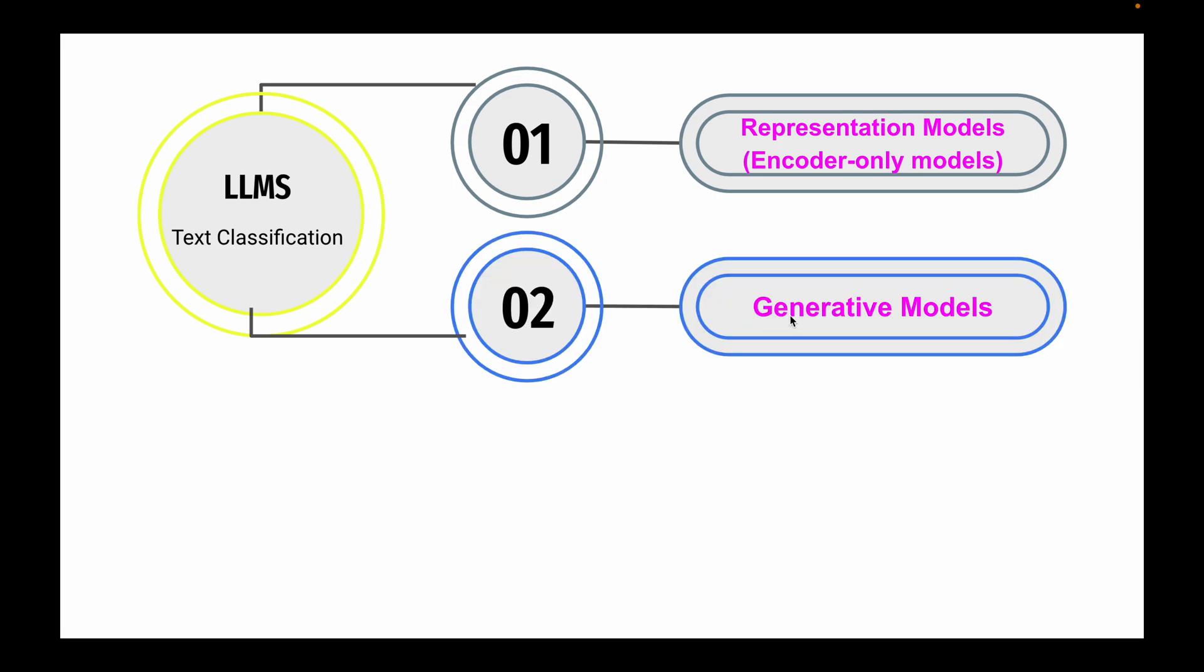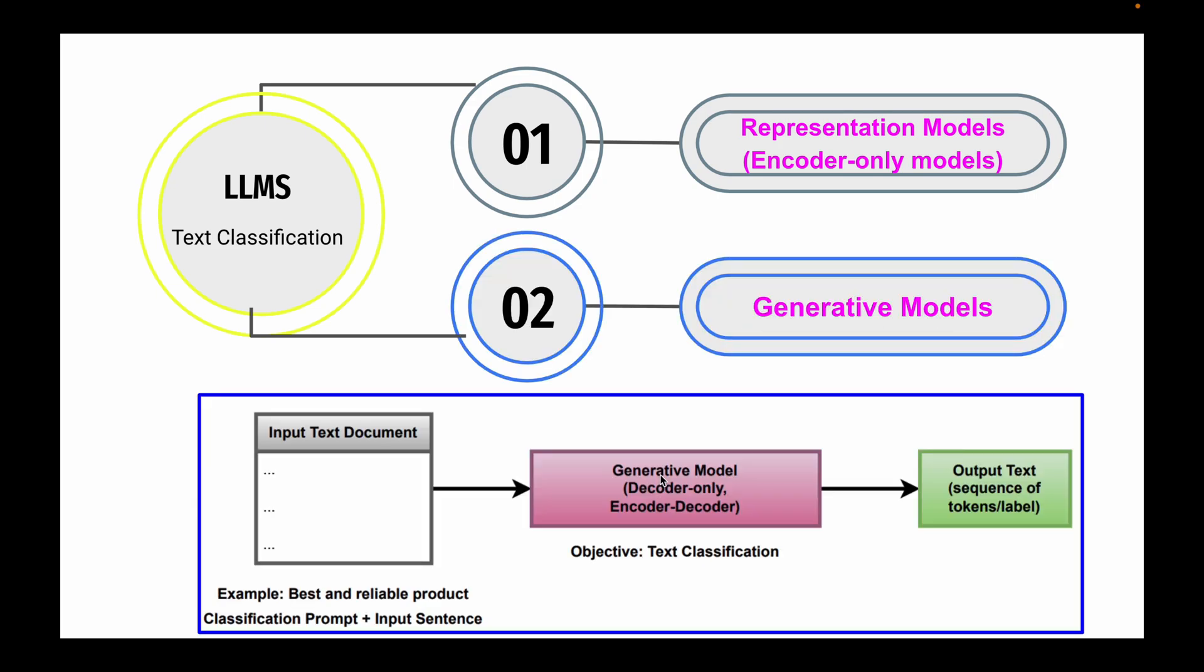The second way is using generative models. A generative model, given an input text, generates output text. For example, if the sentence is 'best and reliable product,' the output won't be a class label. Instead, the output will be text like 'this is a positive review' or 'this is a negative review.' Now let's explore representation models and generative models in depth.